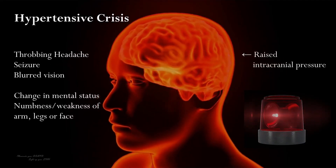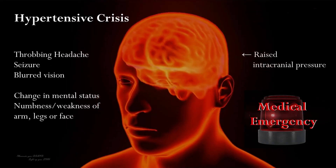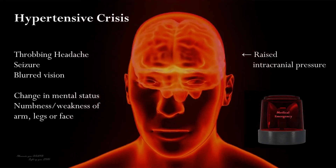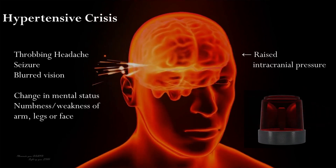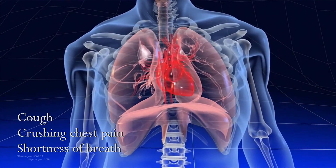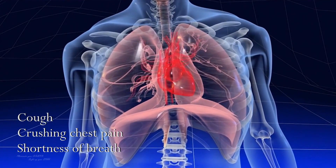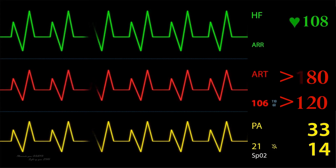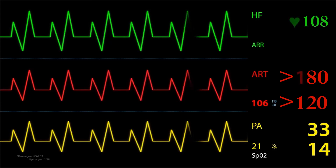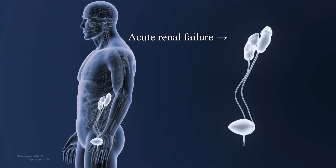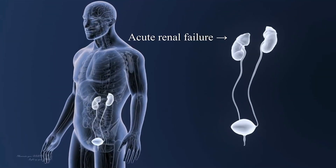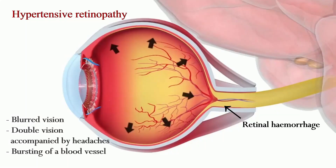Hypertensive crisis is a severe and potentially life-threatening form of high blood pressure, characterized by a rapid increase in systolic pressure above 180 and diastolic pressure above 120, that can cause damage to vital organs such as the brain, heart, kidneys, and eyes.